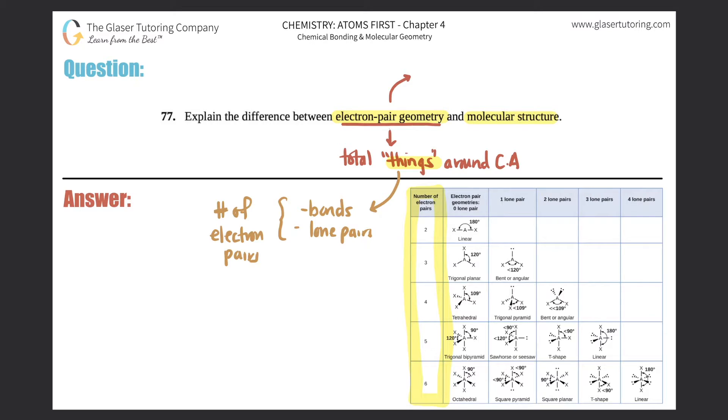With your electron pair geometry, you will assume total things. So for example, we'll do two examples: CH4 and NH3. And then maybe if I move this one up a little bit, I could fit H2O down below. Let me just make a chart real quick, three-tier chart.